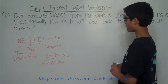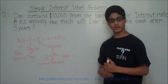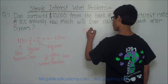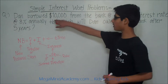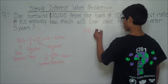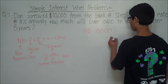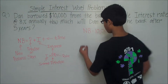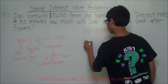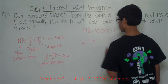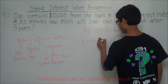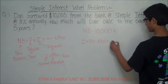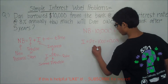Now let's find out how much Dan will owe to the bank after 5 years. We know that the formula is NB, the new balance, is equal to P, the principal or the start. We know that he borrowed $10,000, plus the interest times the time. The formula for interest is I equals P times R, which is 10,000 times 8%, or 0.08.